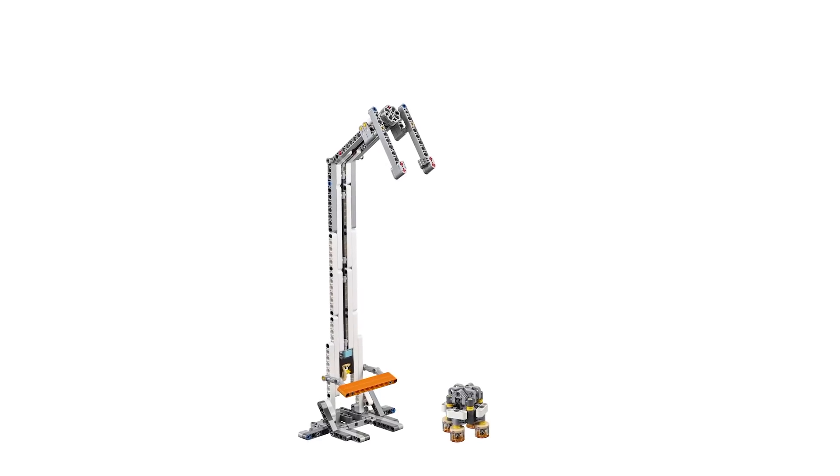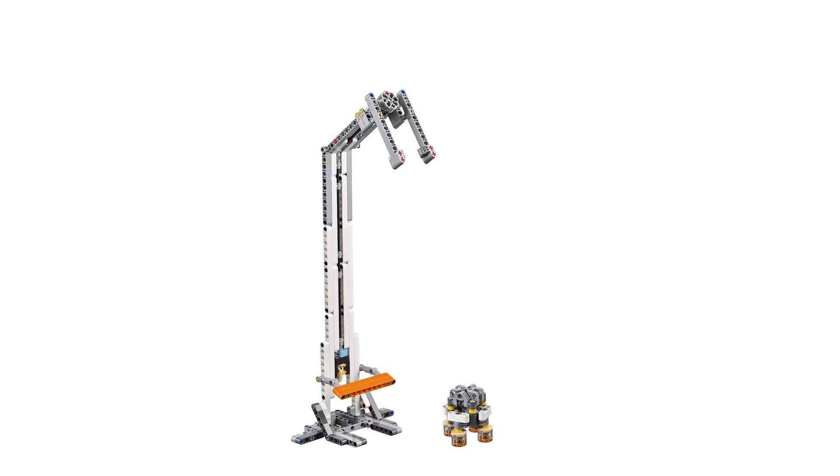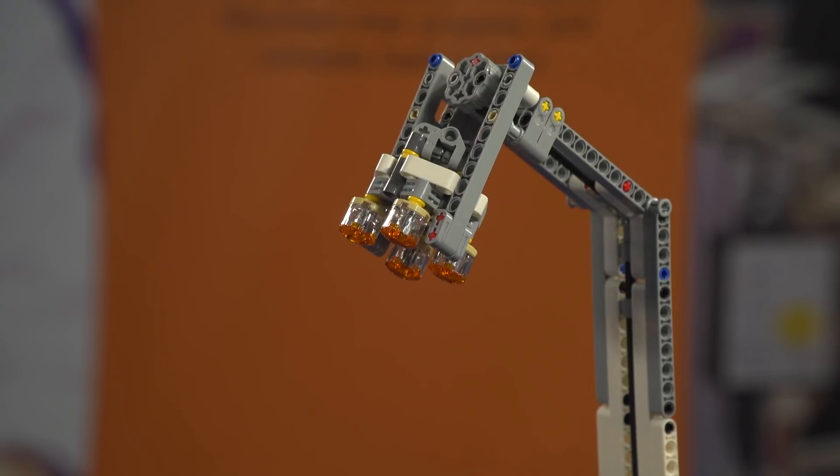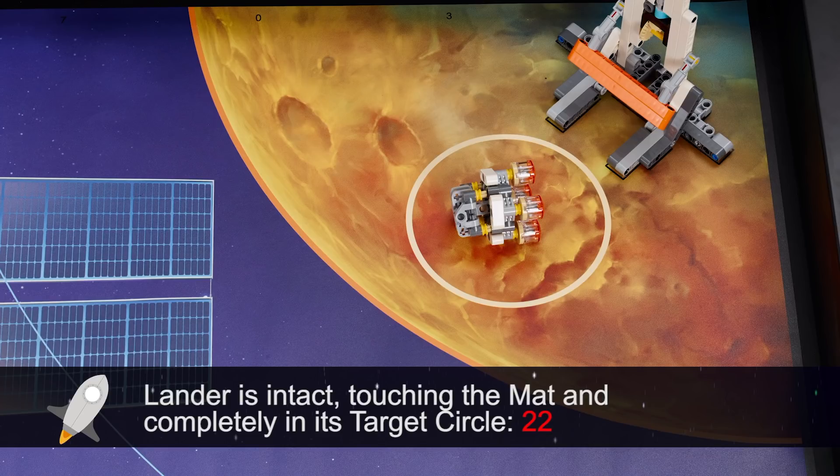Get the lander to one of its targets intact, or at least get it to base. The lander is intact if its parts are connected by at least two of its four tan location axles.